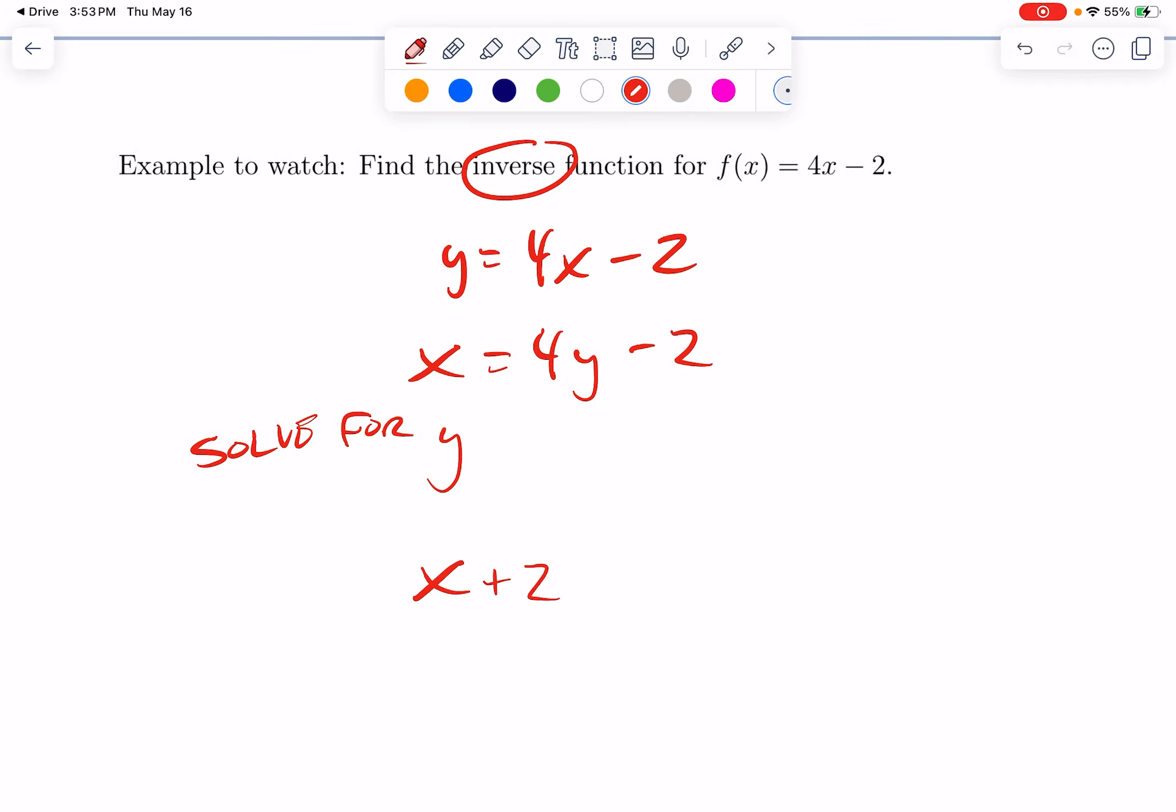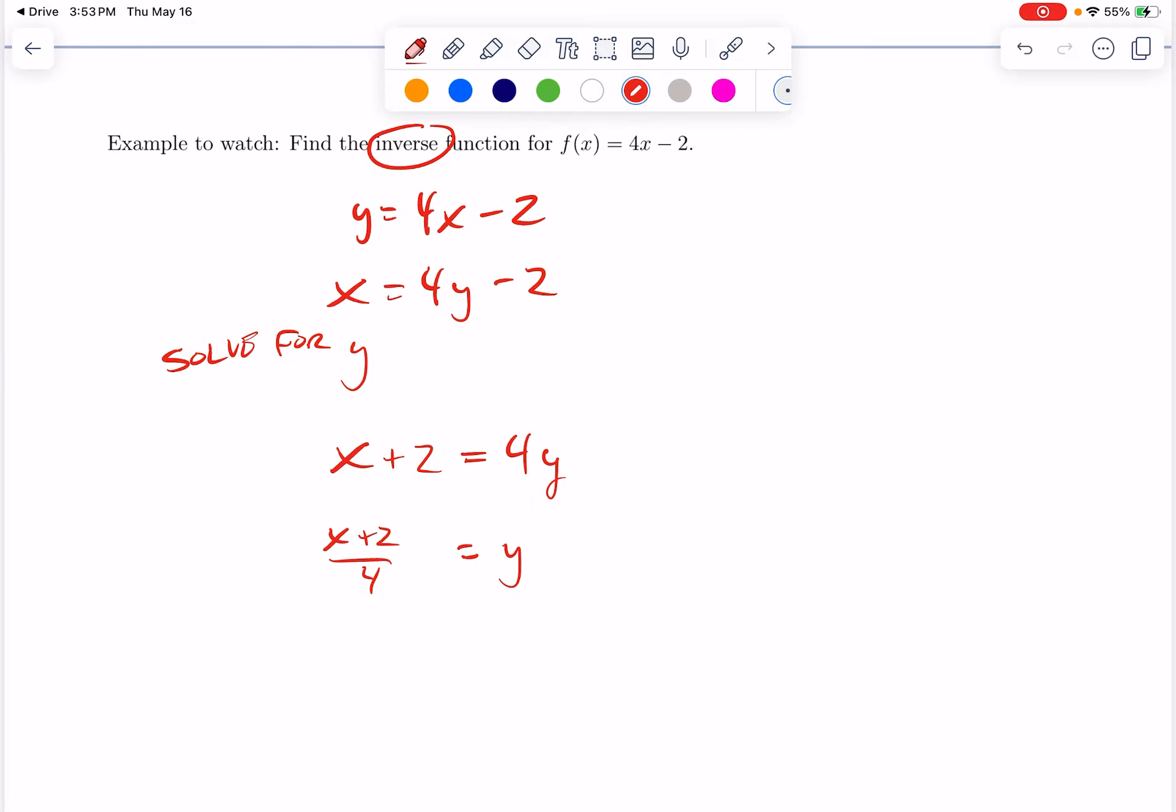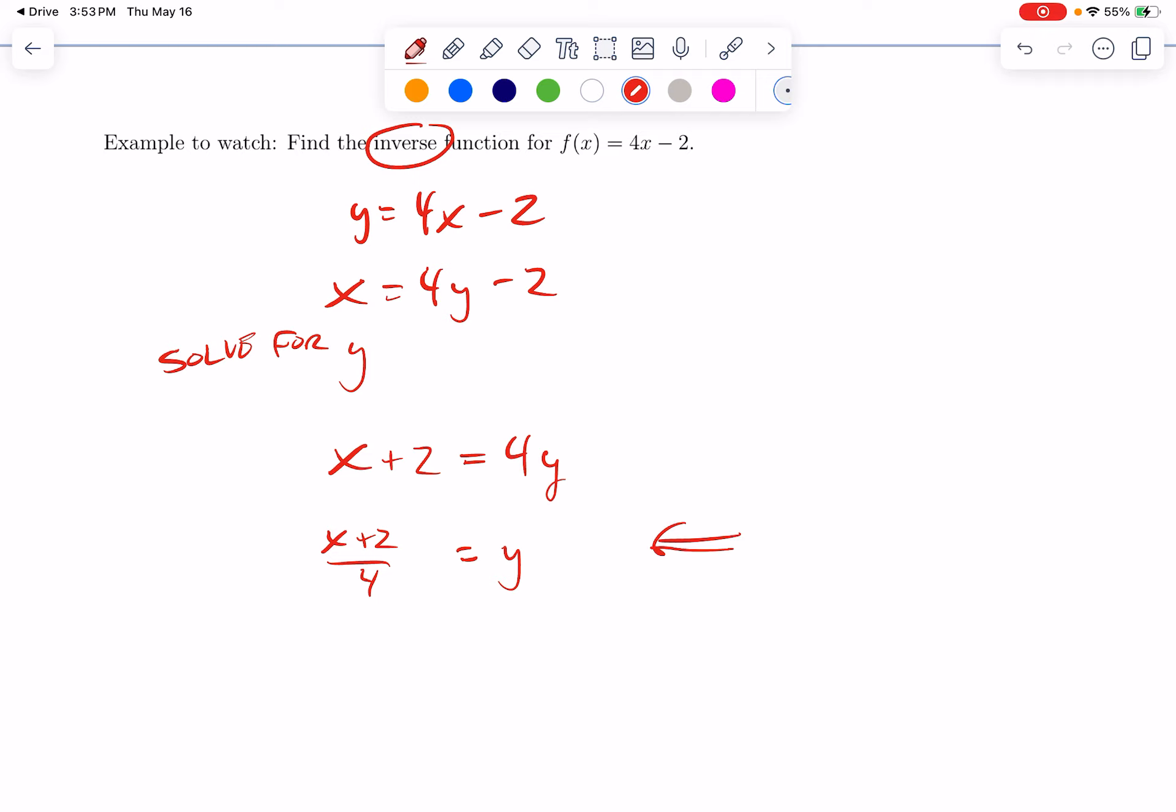So, I can add 2 to each side and then I can divide each side by 4. And this is the backwards version. So, this would be our formula for f inverse of x. It's x plus 2 over 4. And let's check this. I will pick a number. Let's say 7. f of 7 would be 4 times 7 minus 2, which is 28 minus 2, which is 26.